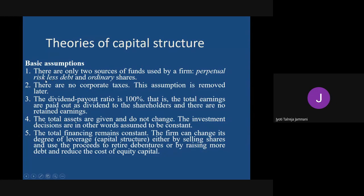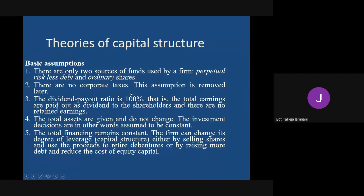The second assumption is that there are no corporate taxes. This was later removed because it is so untrue - without taxes the economy, government, and country cannot run. Some theories assumed no taxes initially, but later modified their theories by removing this assumption. The third assumption is that the dividend payout ratio is 100 percent - all earnings are paid to shareholders as dividend and there are no retained earnings, which is again not true in practice.